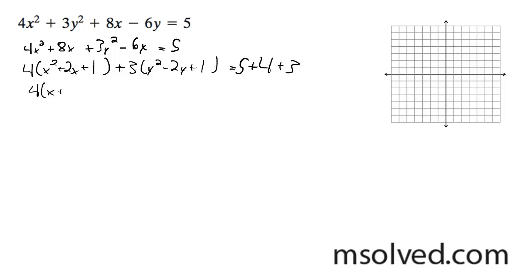We get 4x plus 1 squared plus 3y minus 1 squared is equal to 12. Divide by 12, we end up with x plus 1 squared over 3, plus y minus 1 squared over 4 is equal to 1.